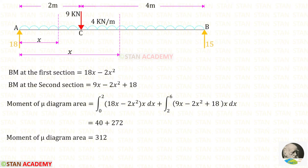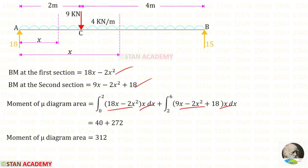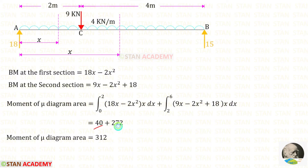Now let us find the moment of the mu diagram area about point A. In the previous step we found the bending moment expressions for both sections. Here we multiply those expressions by x before integrating. When we perform these integrations and add both values, we get the moment of the mu diagram area about point A, which is 312.